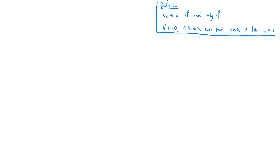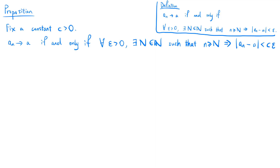In the previous video, we came up with a definition of a convergent sequence. Here it is useful to note that there is a certain degree of flexibility in this definition. If we fix a constant c which is positive, then an is convergent to a if and only if, for all epsilon greater than zero, there exists N a natural number such that little n greater than or equal to N implies that the absolute value of an minus a is less than c times epsilon.